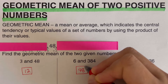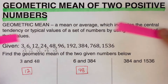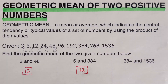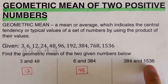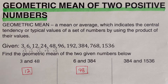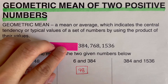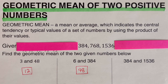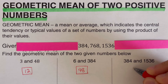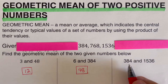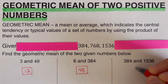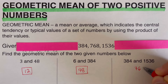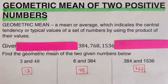Now determine the geometric mean between 384 and 1536. 384 is here and 1536 is right there. The middle number between these two is 768, so the geometric mean between 384 and 1536 is 768. Did you get the same answers? Good.